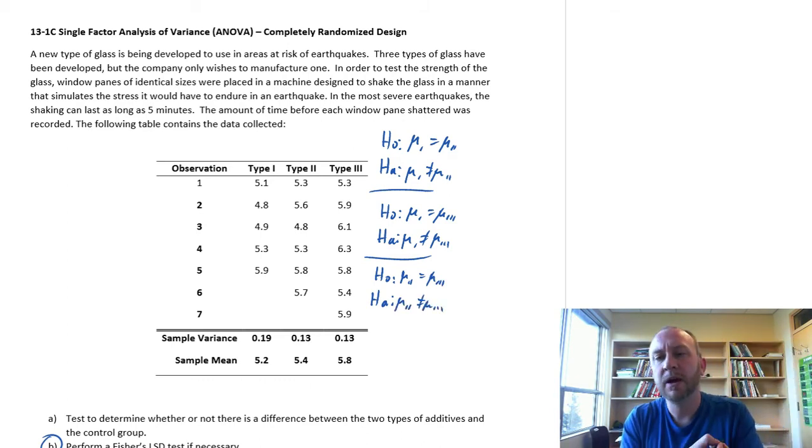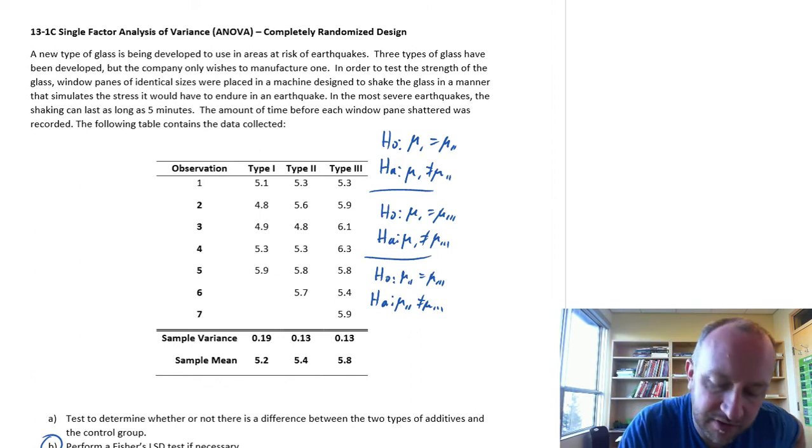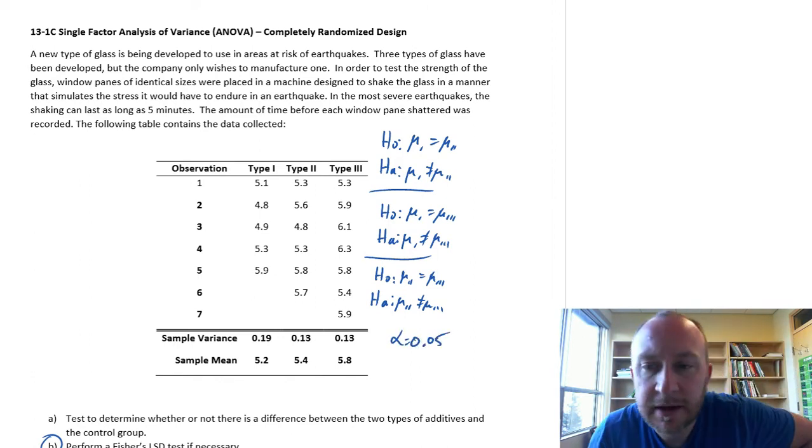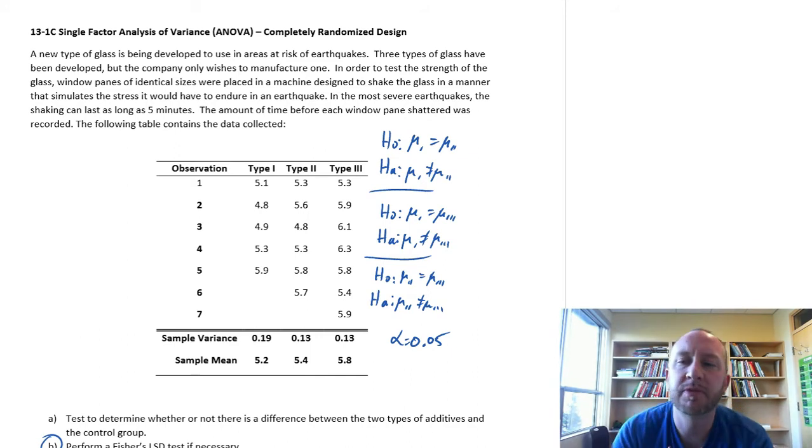Okay, so what we're going to do here, we'll perform all of these tests at the 0.05 level of significance. And here we'll perform the t-test approach. I think in a previous video where we went through the Fisher's LSD exercise, we used what I call the confidence interval approach. Here we'll use the t-test approach.